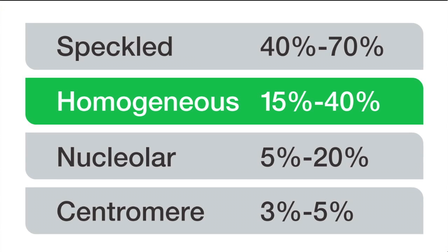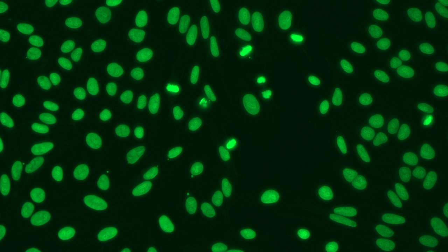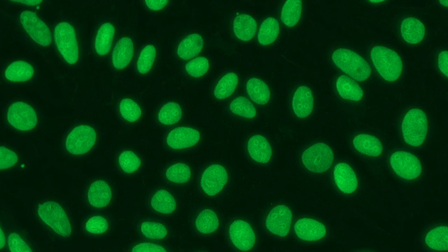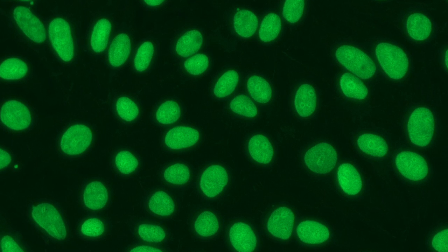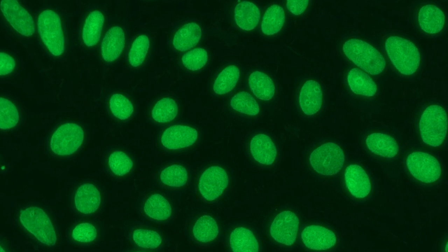Now let's take a look and see what a homogeneous pattern looks like. First, look at the nucleus of your interphase cells. Remember, the majority of the cells that you see on the slide are interphase. In a homogeneous IFA pattern, the nucleus will have an even staining throughout.